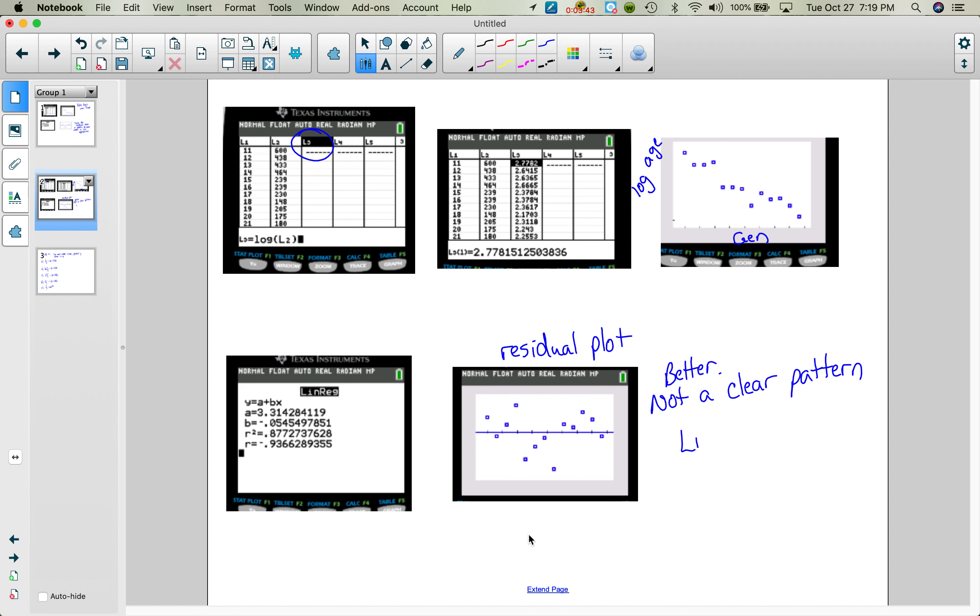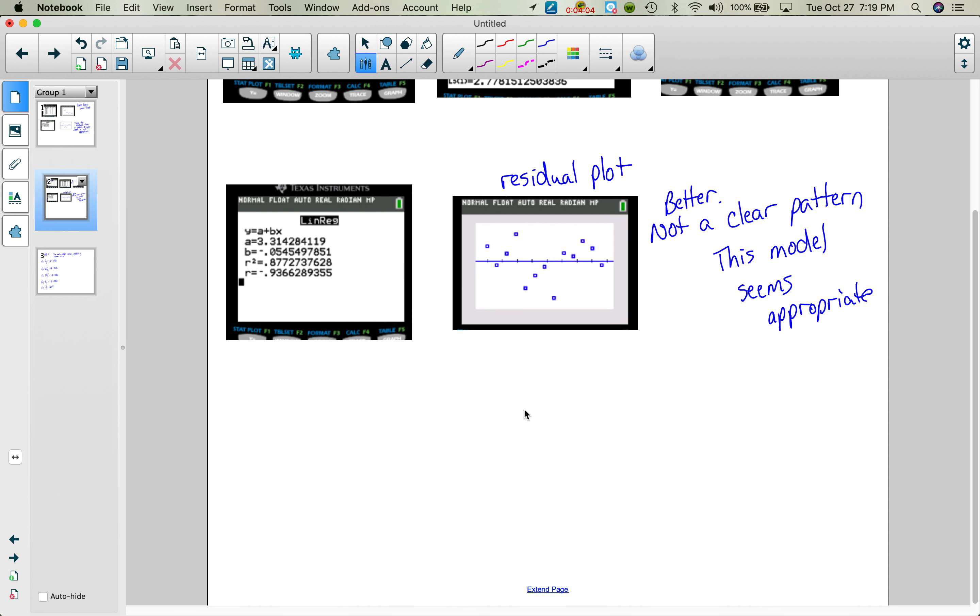So linear, I don't want to call that a linear model. So this model seems appropriate. But what is the model? What's my equation? So that depends on what you did to your data. I did log of my y value, or my age. So I did log of age, and this would be the hat, because that's my predicted, just like we had a y hat. So log of age hat equals, my intercept is 3.3143.